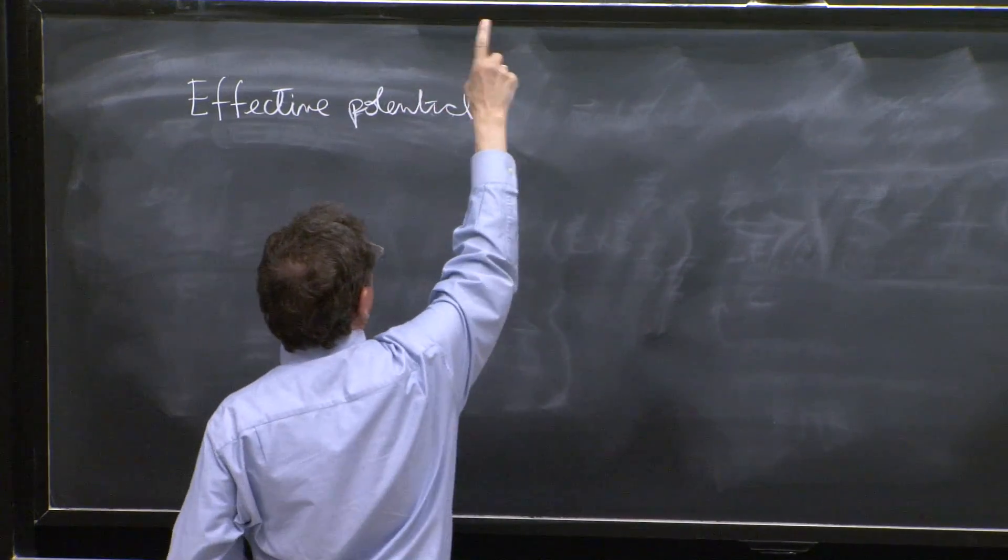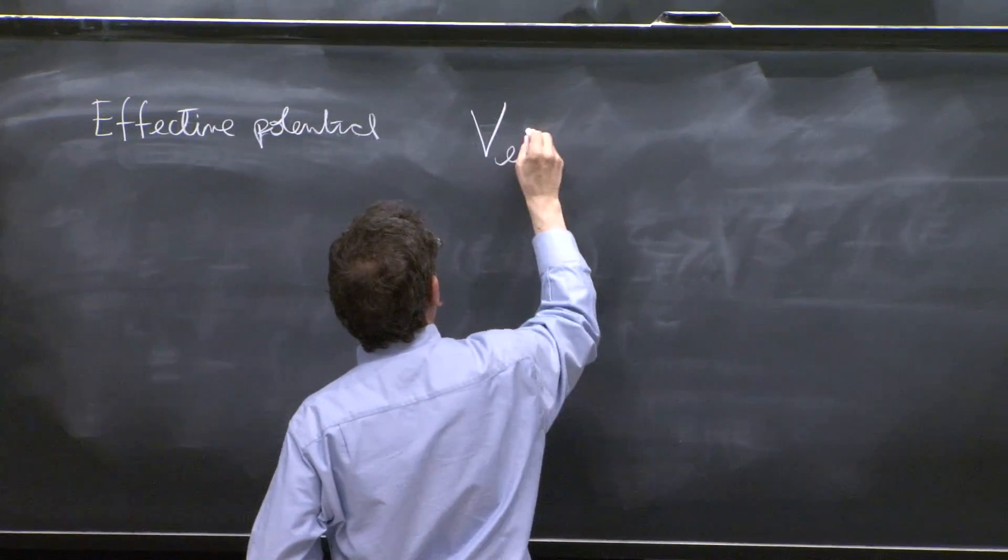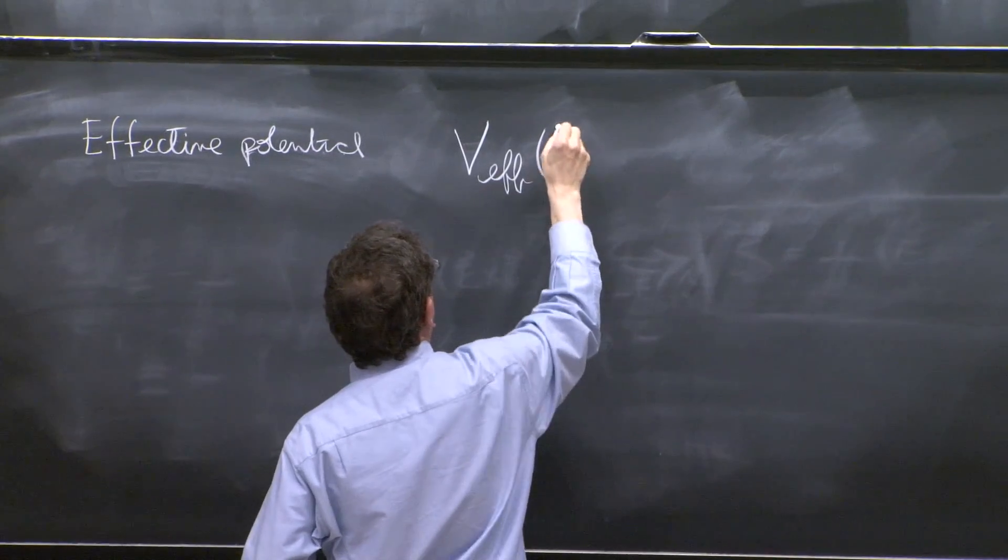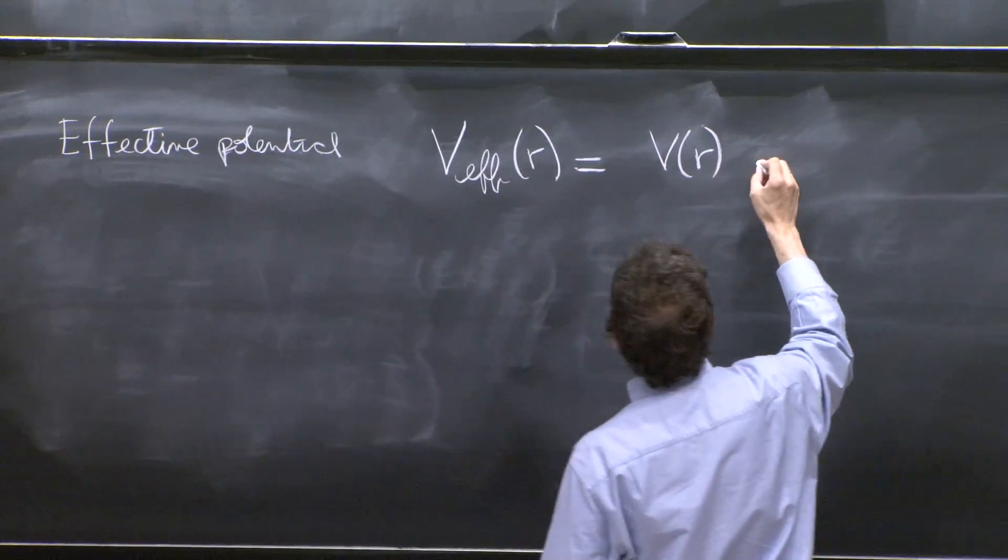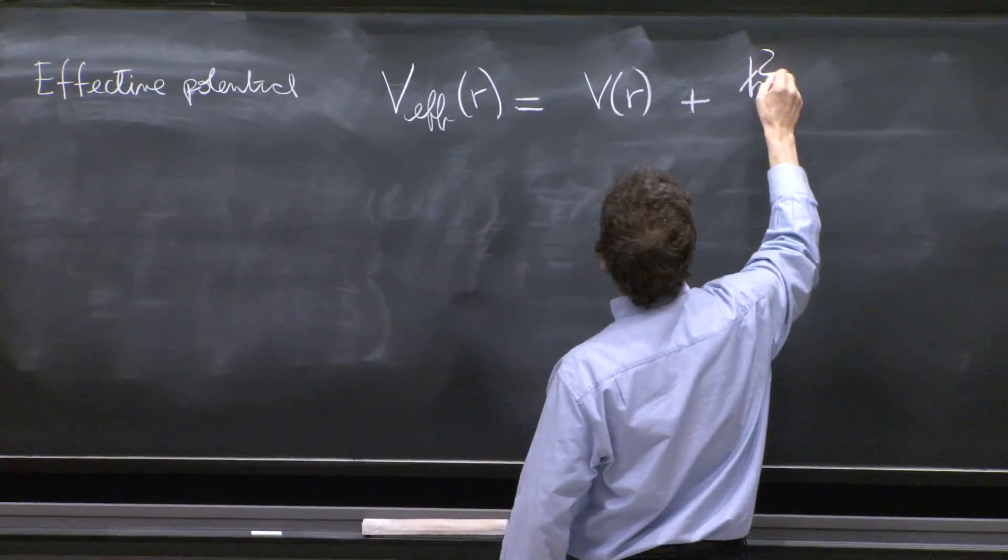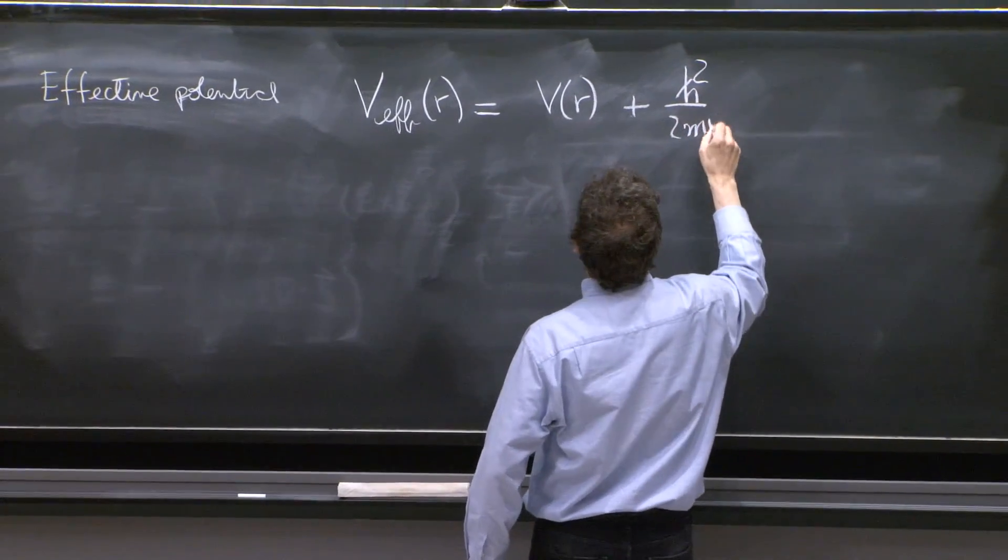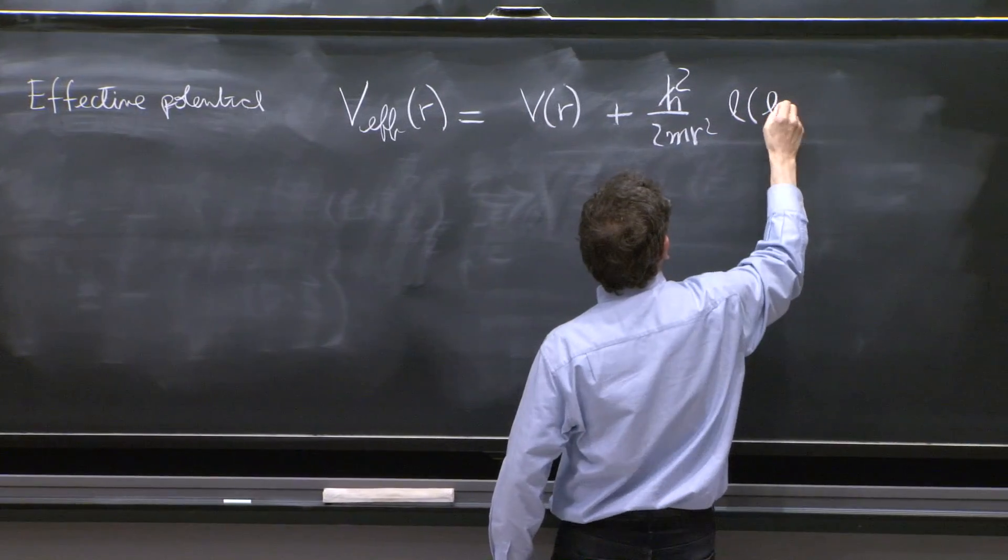This whole thing in brackets over there is sometimes called the effective radial potential. And it's this V(r) plus ℏ²/(2mr²) l(l+1).